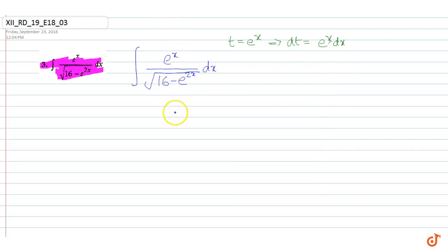Using this substitution, our integral becomes: integral of dt over the square root of 16 minus t squared.